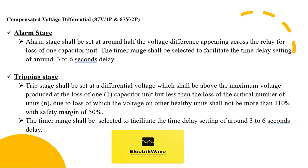Alarm stage shall be set at around half the voltage difference appearing across the relay for loss of one capacitor unit. The timer range shall be selected to facilitate the time delay setting of around 3 to 6 seconds. Trip stage shall be set at a differential voltage which shall be above the maximum voltage produced at the loss of one capacitor unit, but less than the loss of the critical number of units due to loss of which the voltage on other healthy units shall not be more than 110%, with a safety margin of 50%. The timer range shall be selected to facilitate the time delay setting of around 3 to 6 seconds.